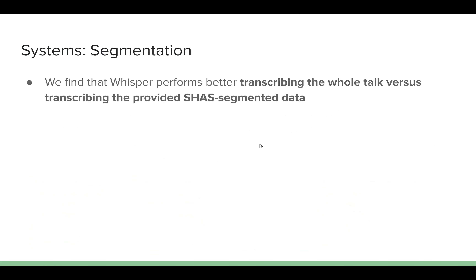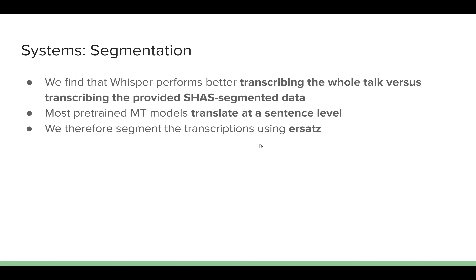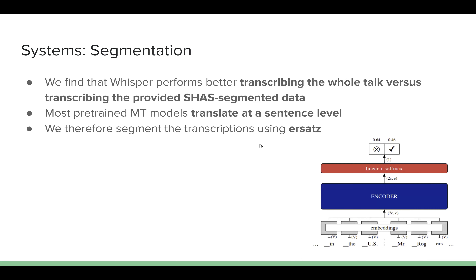We found that Whisper performs better when transcribing the whole talk compared to transcribing the VAD-segmented data, since not only does the format match the training setup for Whisper more closely, but it also allows Whisper to make better use of contextual information. By contrast, most MT systems perform translation sentence by sentence as opposed to translating the entire document. We therefore employ sentence segmentation as part of our cascaded speech translation pipeline, using the ERSATZ segmenter on our transcription before feeding it to our downstream MT system. ERSATZ uses a two-layer transformer architecture trained on a classification task, which predicts whether each candidate segmentation site is to be segmented or not. In general, segmentation tools need to deal with acronyms and irregular punctuation, and this learned approach helps to avoid over-splitting on these irregularities.